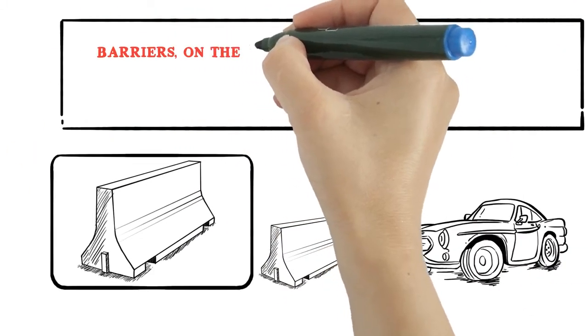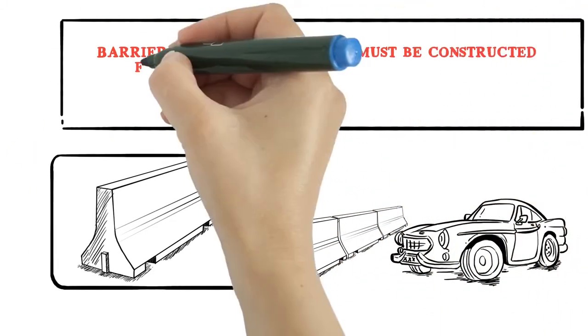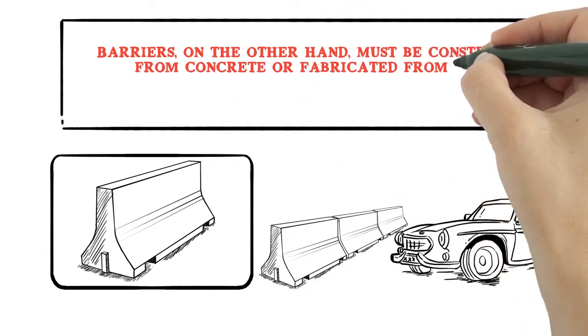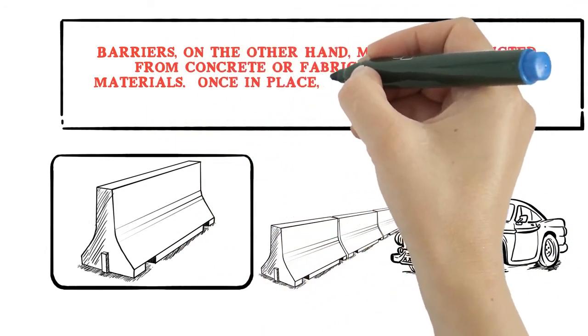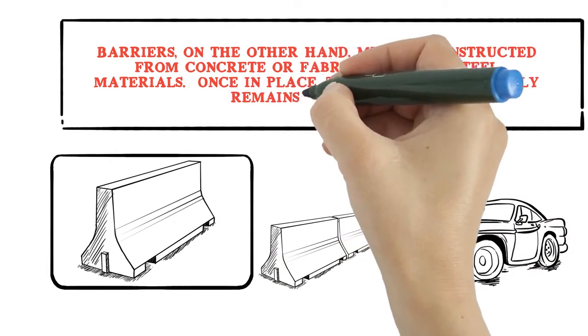Barriers, on the other hand, must be constructed from concrete or fabricated from steel materials. Once in place, their position typically remains stationary.